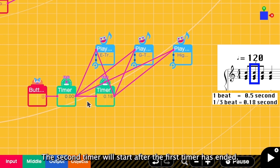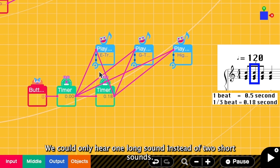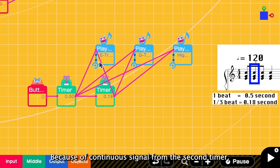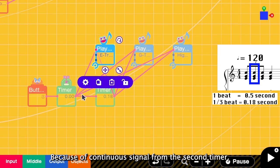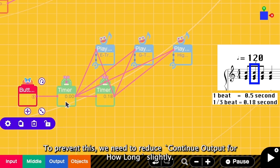Okay. So when the first timer ends, the second timer will start. Let's test. But right now we could only hear one long sound, right? That's because the second timer starts as soon as the first timer ends. So it looks like we have been sending the signal for 0.36 seconds.